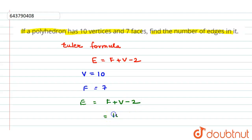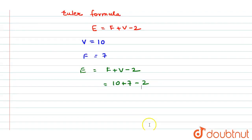So 10 plus 7 minus 2 is equal to, 10 plus 7 is 17, minus 2 is equal to 15.